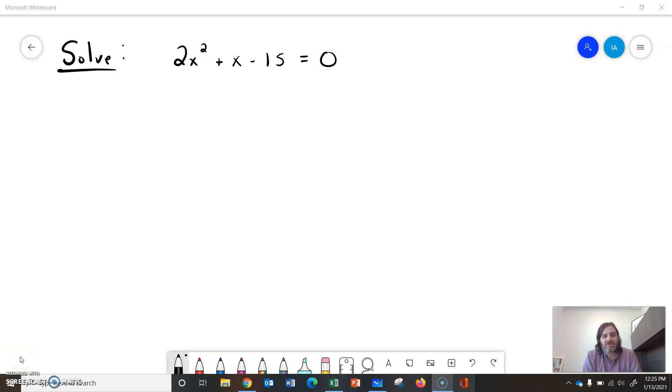Hey, we're going to solve a quadratic equation, which is 2x squared plus x minus 15 equals 0, and everything is on one side, so we're going to try to factor it.